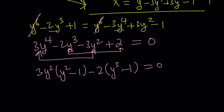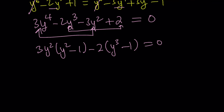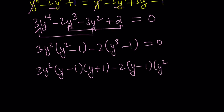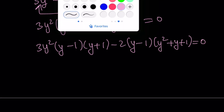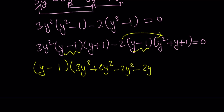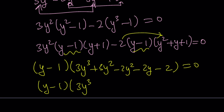Both y squared minus 1 and y cubed minus 1 have y minus 1 as a factor. Using difference of two squares and difference of two cubes, we can break them down further. y minus 1 is a common factor, so let's take it out. This confirms y equals 1 is a solution. Distributing gives us the second factor: 3y cubed plus y squared minus 2y minus 2 equals 0.